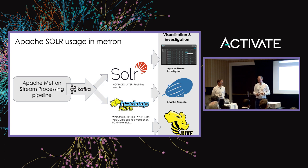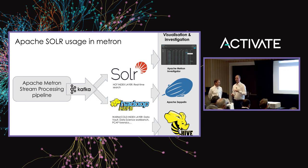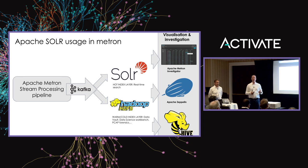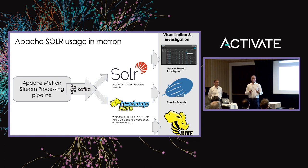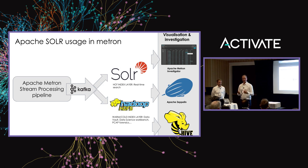Solr is a very important piece of Metron because it powers the real-time search — the hot index layer, the last 90 days of data. We actually started out with Elasticsearch, but we recently made Solr the default. The reason is that a lot of the community really believes in a 100% open source solution. With cybersecurity, security is of course very important. With Elasticsearch, components like X-Pack are not fully 100% open source. With Solr, we can protect collections with Ranger and Kerberos — so it was a really good fit.